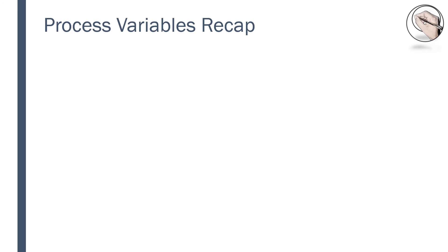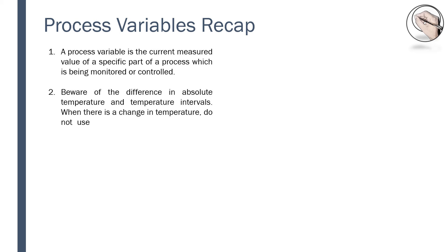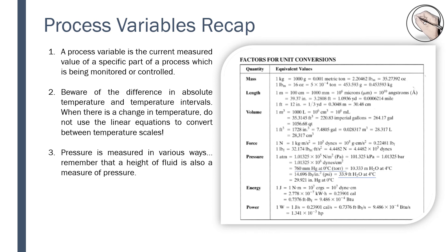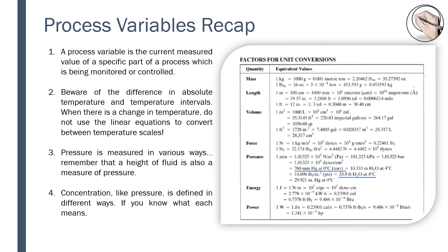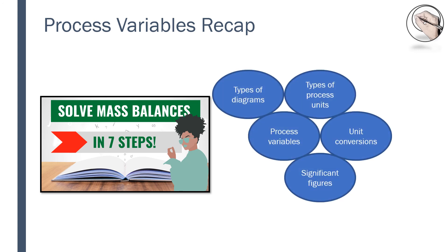This brings us to the end of process variables part 1. Let's recap. A process variable is the current measured value of a specific part of a process which is being monitored or controlled. Beware of the difference in absolute temperature and temperature intervals — when there is a change in temperature, do not use the linear equations to convert between temperature scales. Pressure is measured in various ways; remember that a height of fluid is also a measure of pressure. Concentration, like pressure, is defined in different ways as well. If you know what each means, using concentration to solve for mass balances will go a lot smoother. In the very first video, we discussed concepts you must familiarize yourself with to perform mass balances in 7 steps. We started off with unit conversions, and now we have completed a portion of process variables.